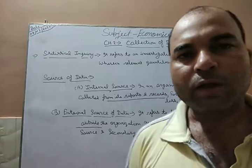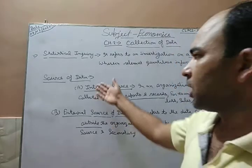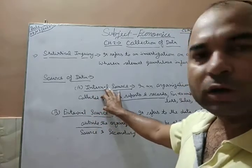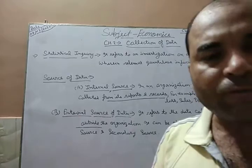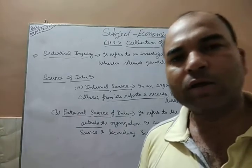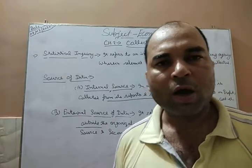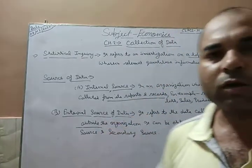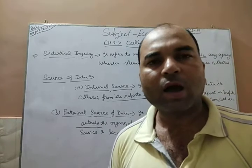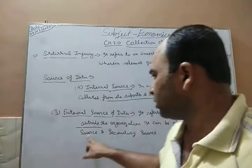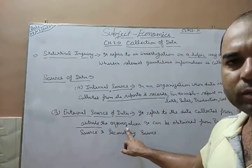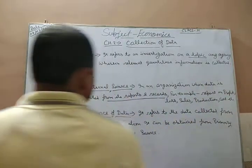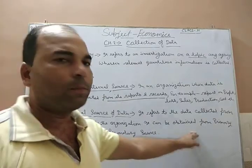To summarize, source of data means there are two types: internal source and external source. In internal source, data is collected within the organization — either from files, records, or reports. In external source, data is collected from outside the organization.